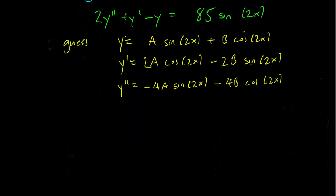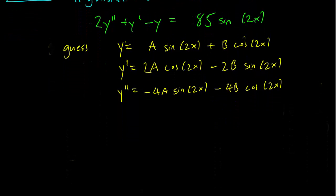This looks a bit more promising. So let's write down the expression in this term. So we have 2y double prime. That's going to be 2 times minus 4A sine 2x minus 4B cosine 2x.